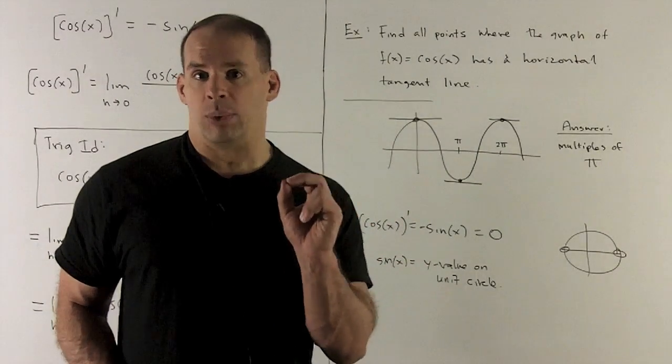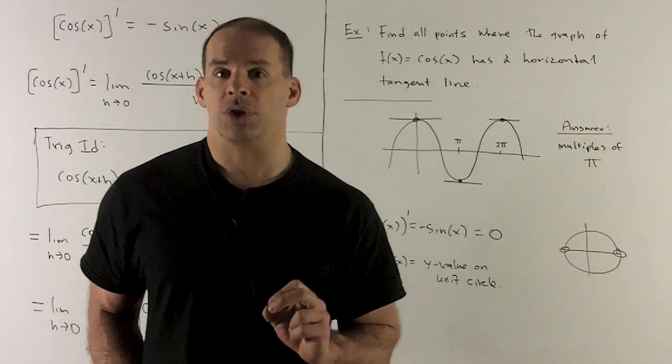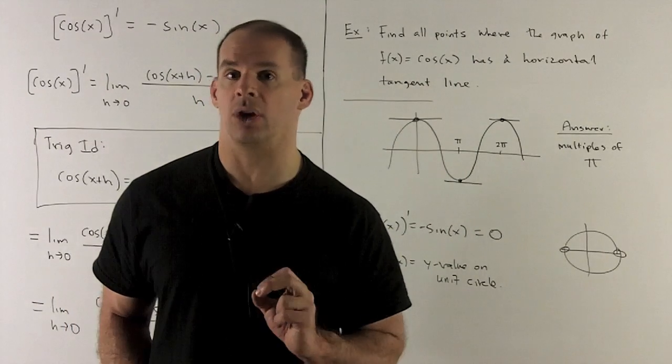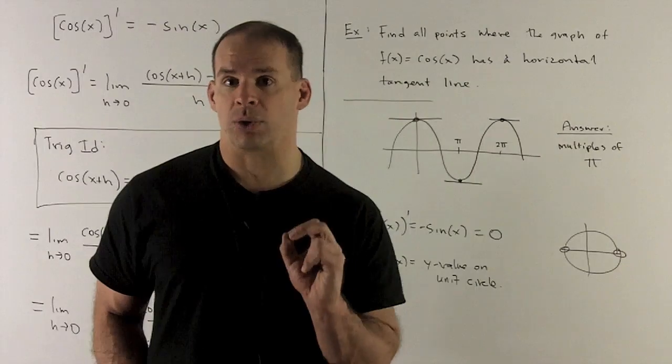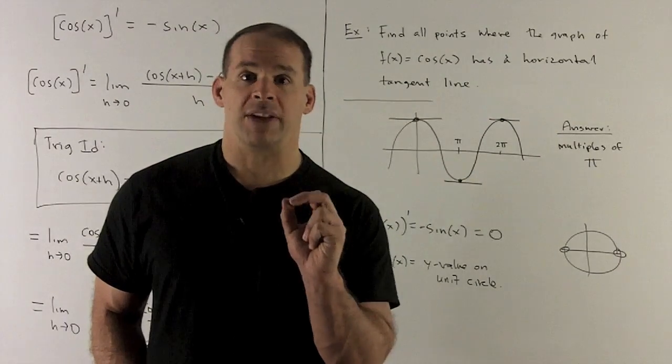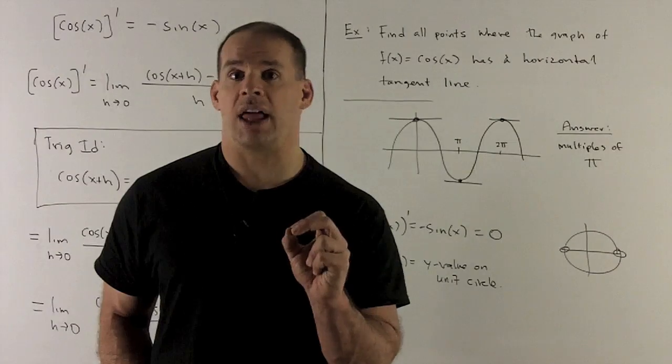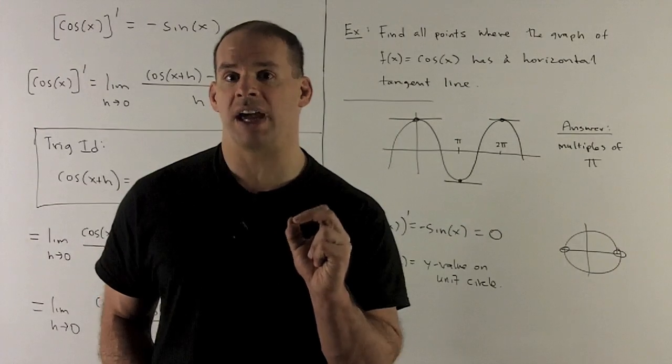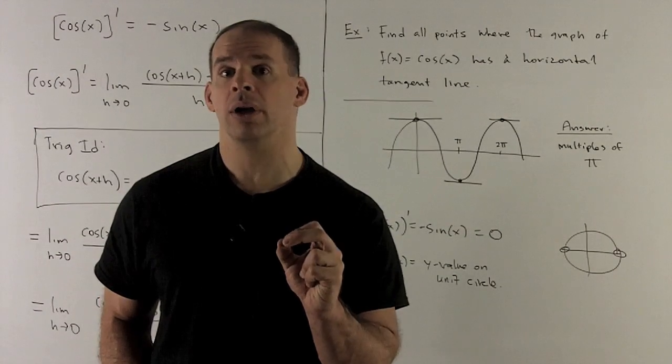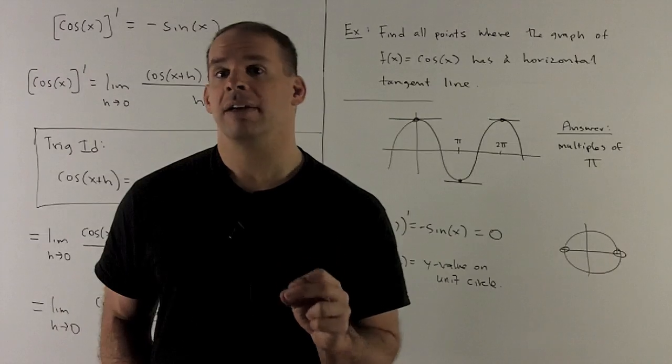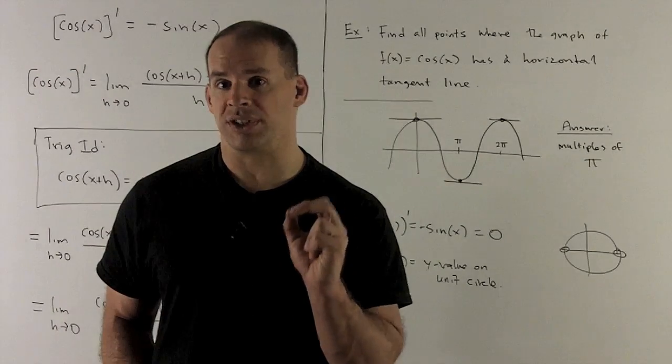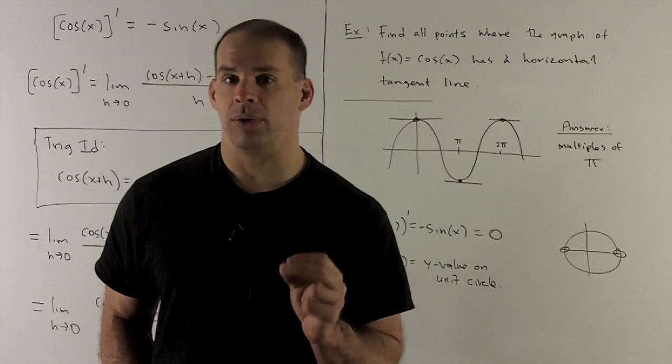So how do we get that using the derivative though? So suppose we have no idea what the picture of cosine looks like. Take my derivative. Remember that the derivative is telling us slope of the tangent line. So if I want a horizontal tangent line, the slope is going to be 0. So all we're asking here is find where the derivative is equal to 0.